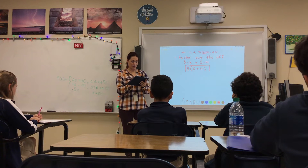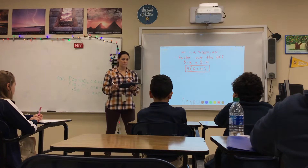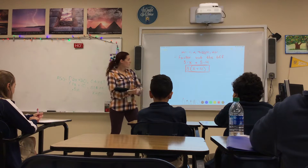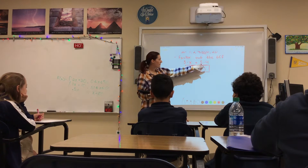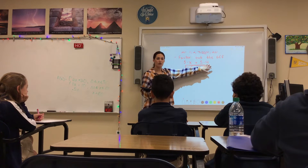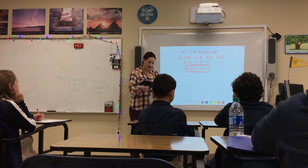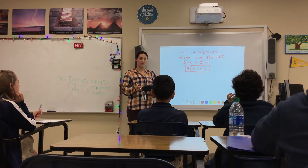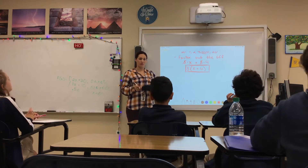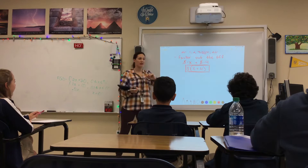That's the factored expression. So this 5 times 4 was 20. If I took that 5 out, the only thing left is 4. So x plus 4 is what will be left — giving us 5(x + 4).